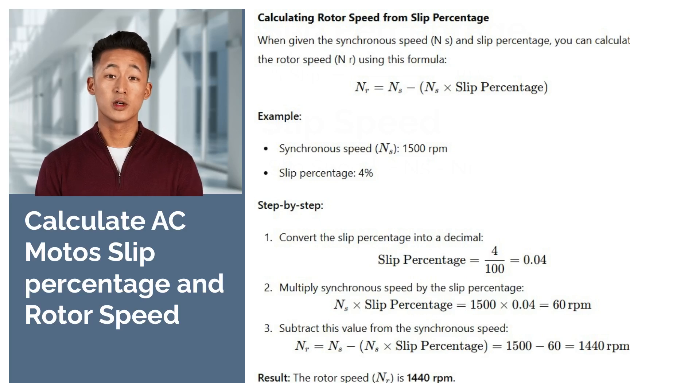Since the rotor speed is slightly slower than the synchronous speed by the slip percentage, we can rewrite the formula as rotor speed equals synchronous speed minus synchronous speed times slip percentage. By practicing these calculations with examples, you'll better understand motor speed relationships and performance. Feel free to pause the screen and verify the example result yourself.